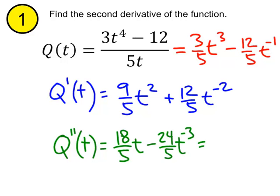If I feel the need to avoid negative exponents, that would be 18t over 5. I'm going to write it this way for a reason, you'll see in a moment. Minus 24 over 5t cubed. So I could write that.